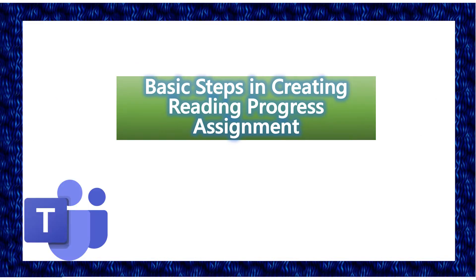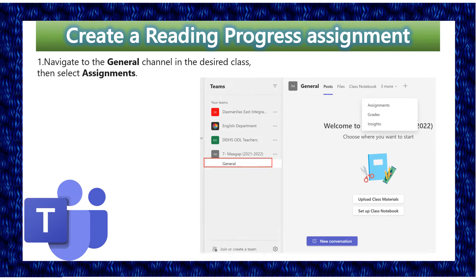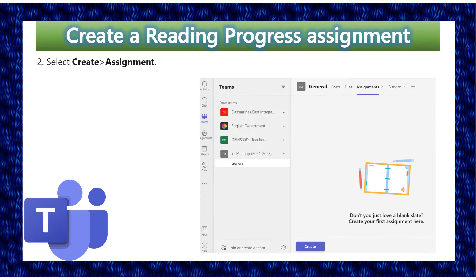Here are the basic steps in creating Reading Progress assignments. Number 1: Navigate to the General Channel in your desired class, then select Assignments. Number 2: Select Create and then Assignments.